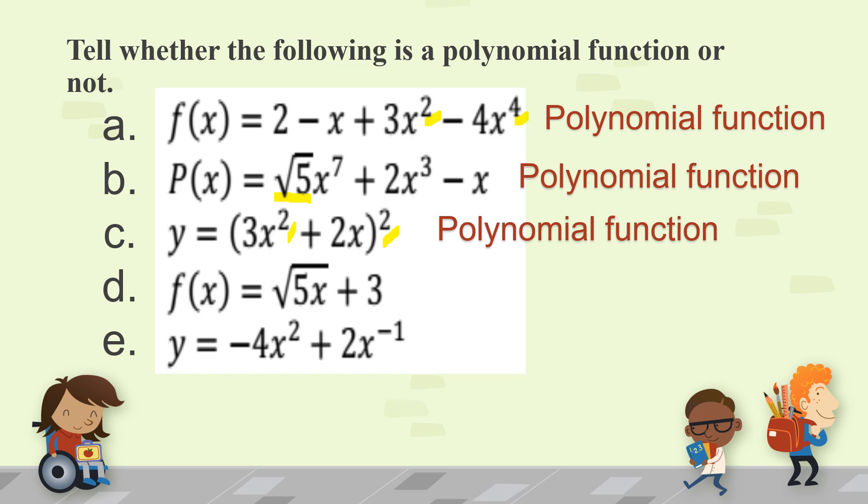Letter d, f(x) = √(5x) + 3. Not a polynomial function. Why? Because the x here, its exponent, is inside the radical sign. So, this is not a polynomial function. Because radicals are not allowed. And remember, if that were square root of x, when we write it in exponential form, that is x raised to 1/2. And fractions are also not allowed in the exponent.